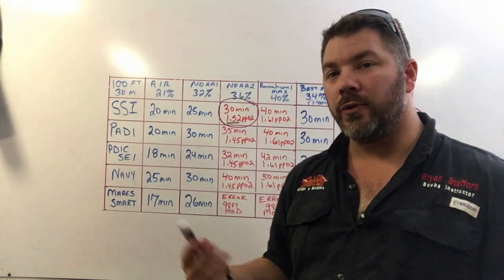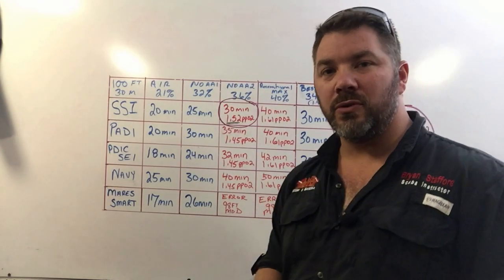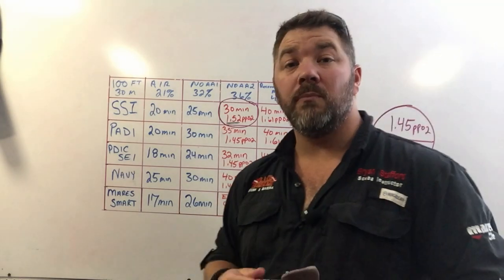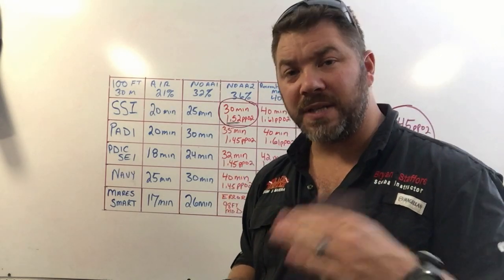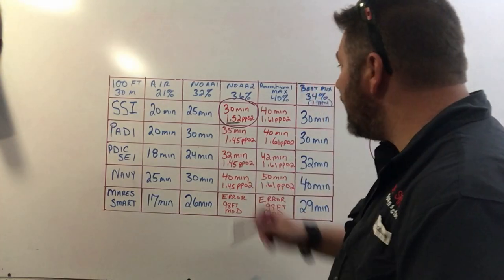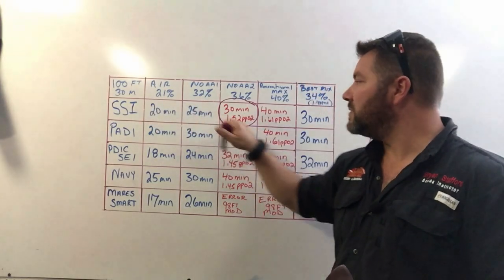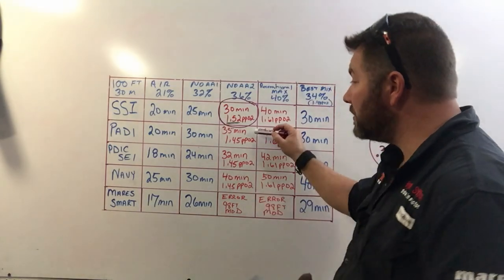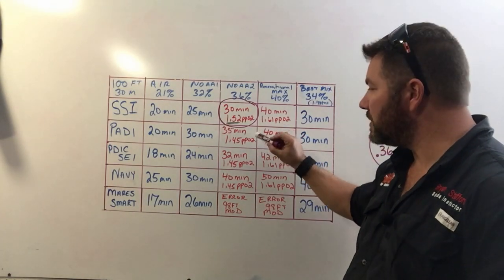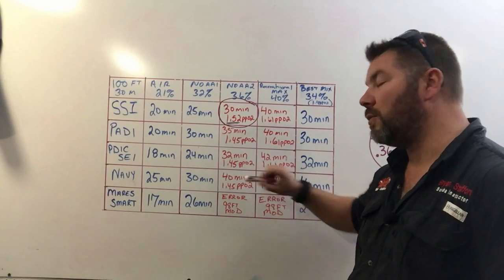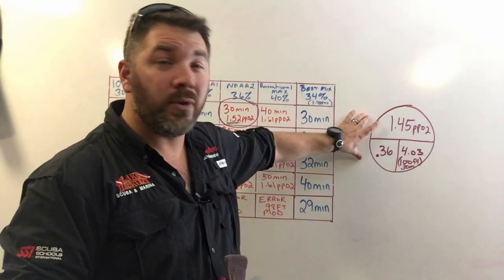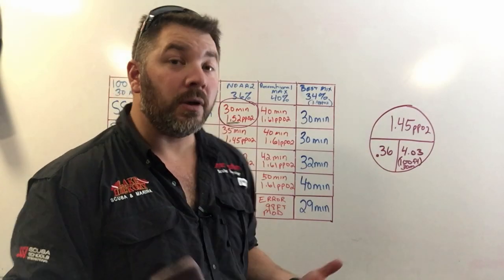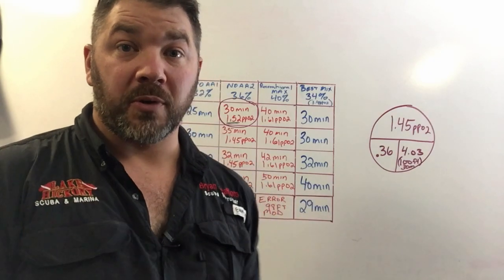No matter whose tables you use, no matter the math, and I'm gonna show you the math behind it, it puts you above a 1.45 partial pressure and we typically want to leave that at a 1.4 or lower. However, with the SSI tables it puts us at a 1.52 partial pressure. All the other agencies that we train through say 1.45, and if I show you here, even doing the math alone it says 1.452.